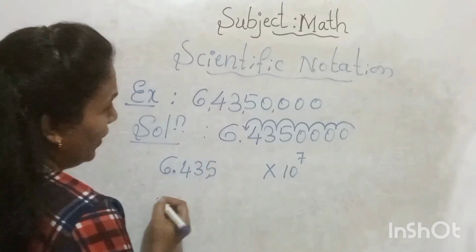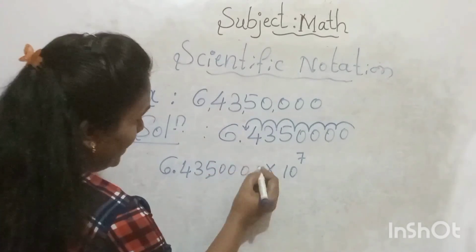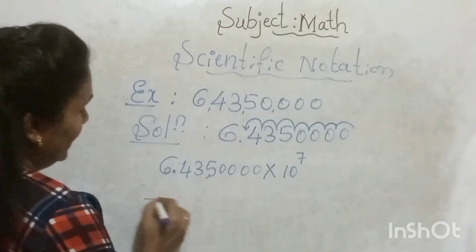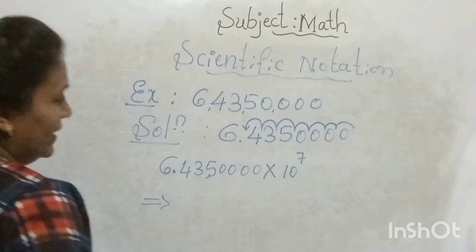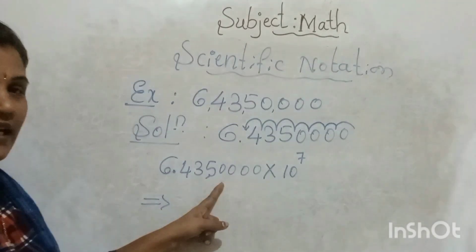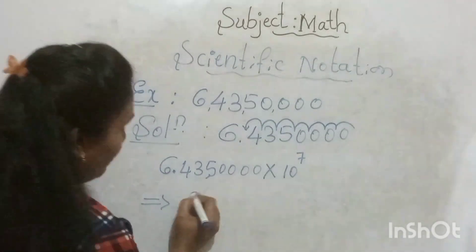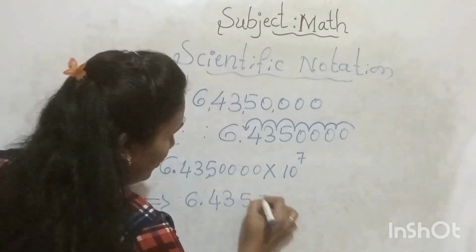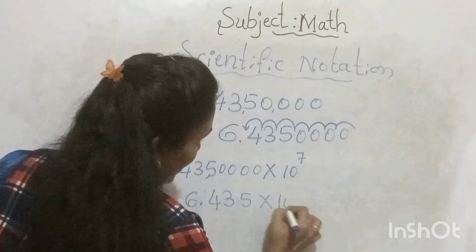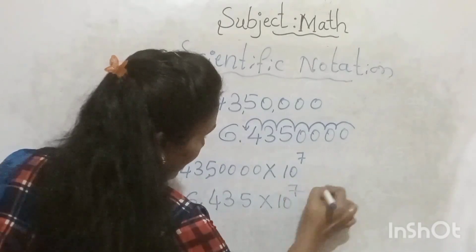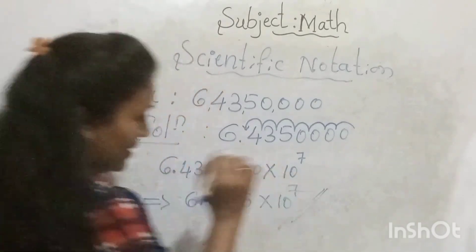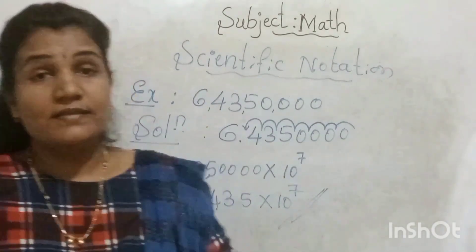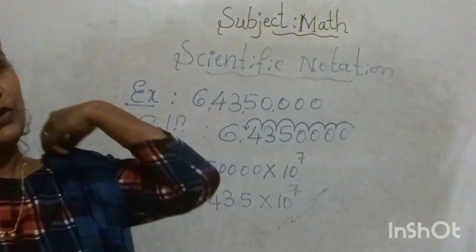Since the decimal moved 7 places from right to left, the exponent is positive 7. So we write 6.435 × 10⁷. This is the scientific notation for 64,350,000.